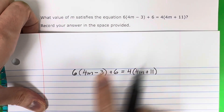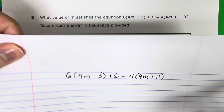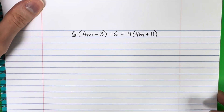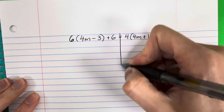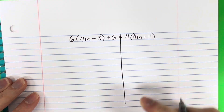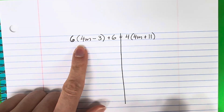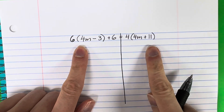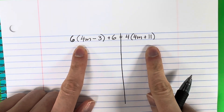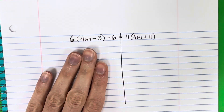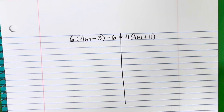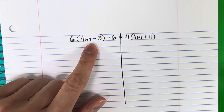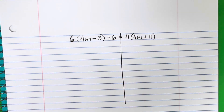I'm going to copy that question over here. Let's put a line on the equal sign to separate the left from the right side. We're going to start with the left side. If there are parentheses, you must do the parentheses first.